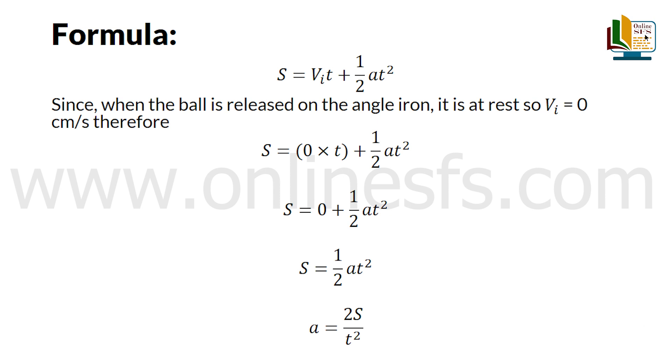Since when we release the sphere on the angle iron when we perform the experiment, the sphere's initial velocity v i is 0 centimeters per second. Therefore, s equals to 0 multiplied by t plus half a t square.